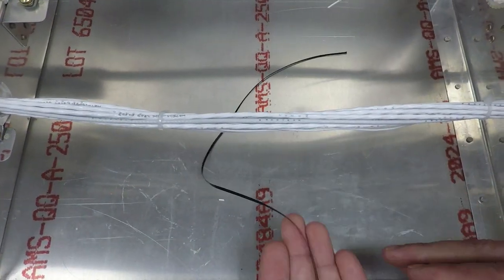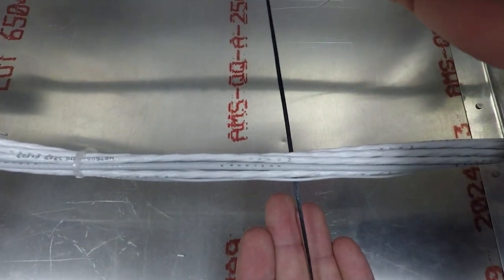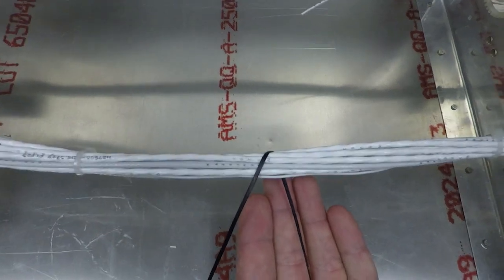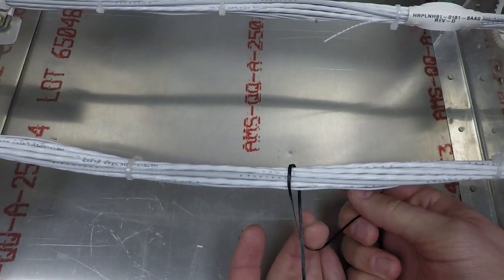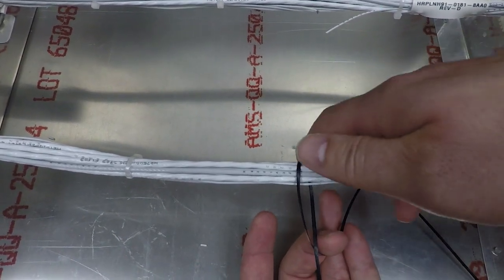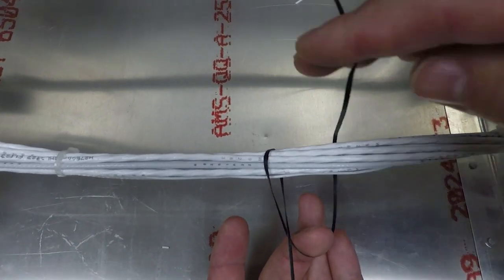We start out by taking the lace cord and bringing it underneath the harness, bring it over and to the left of the stationary hand. I'll keep the knot still open. To finish the hitch, I will bring it over again through the middle.